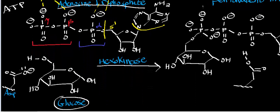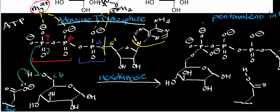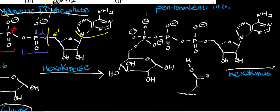With ATP and glucose both bound in the enzyme, we can now phosphorylate. There's a critical aspartate residue in the active site. This aspartate is going to deprotonate the C6 hydroxyl group of glucose, and then that bond breaks and you get nucleophilic attack on the gamma phosphate of ATP. This generates a trigonal bipyramidal intermediate, also called a pentavalent intermediate.